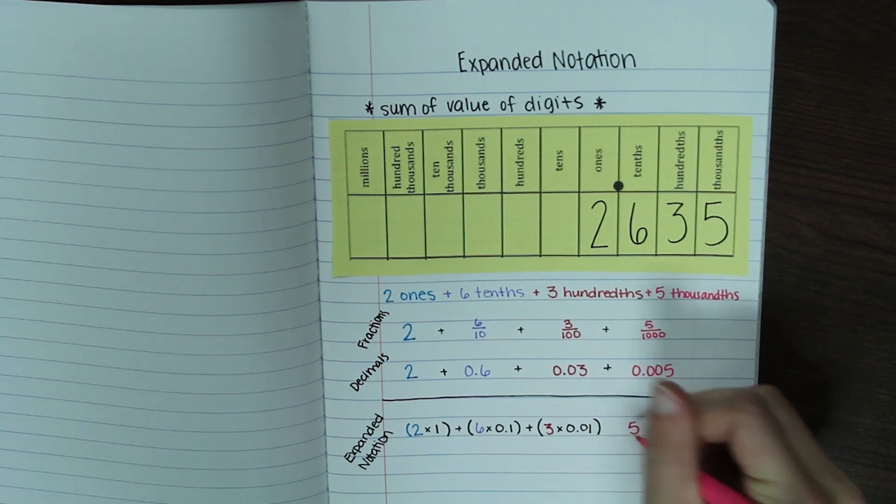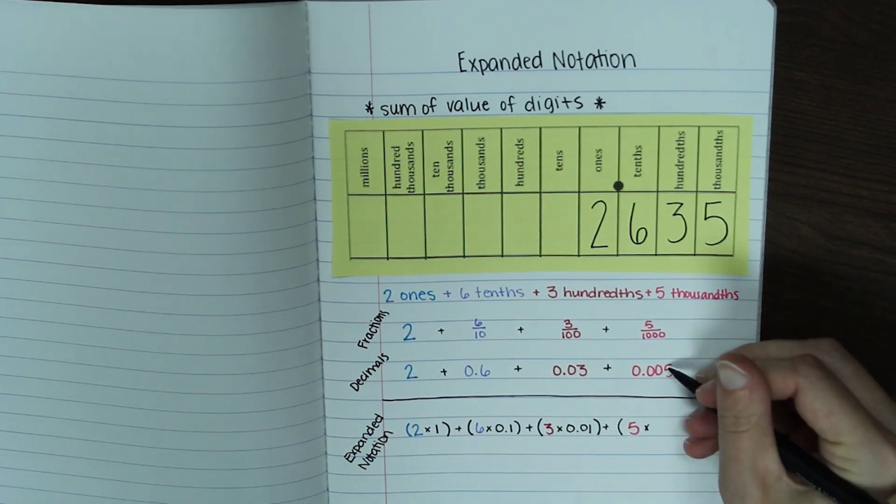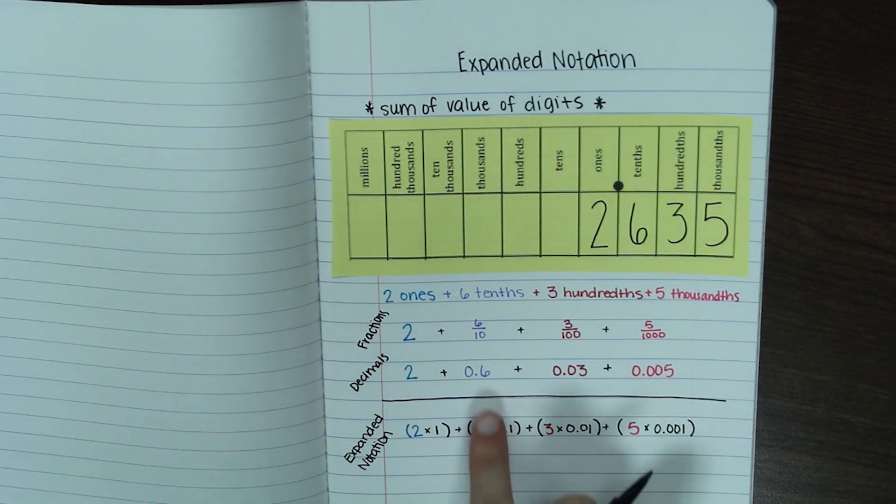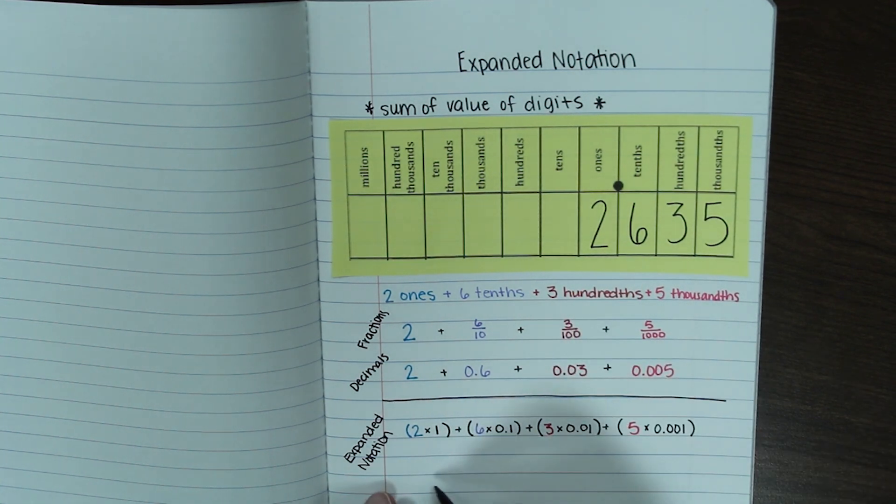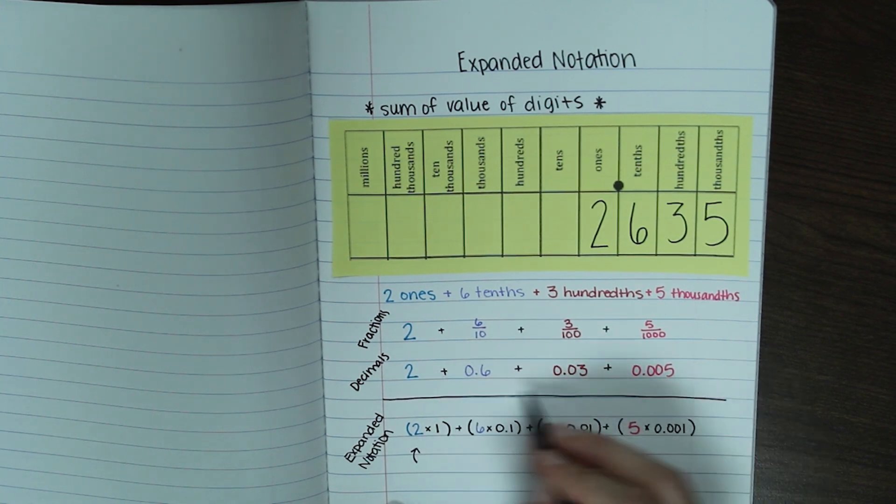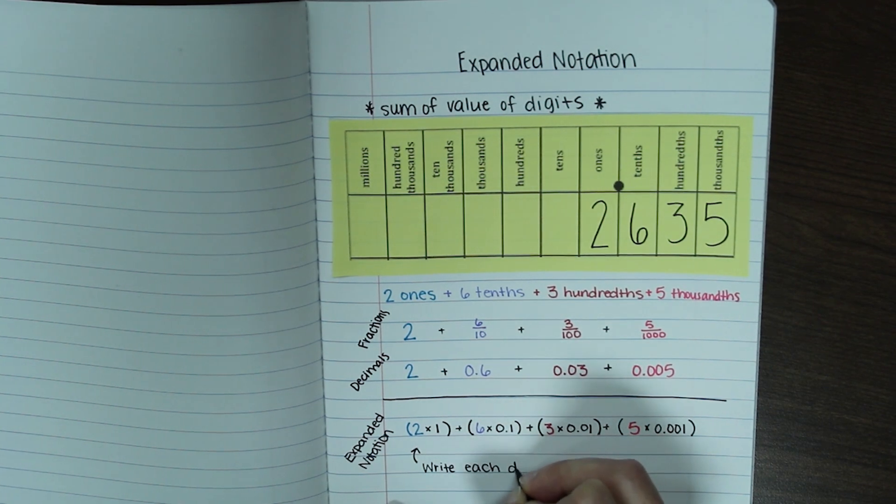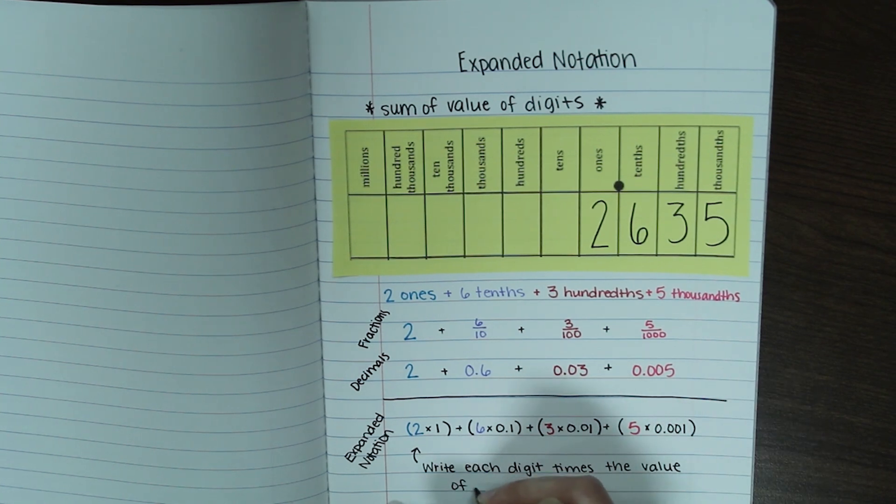My last one is going to be my five. It is in the thousandths place. So I'll multiply it by a one in the thousandths place. All these things together will add up to this. And all these things together will add up to your original number. They all equal the same thing. So one more note to write at the bottom is to write each digit times the value of its place. That's how you get from expanded form to expanded notation. Write each digit times the value of its place.